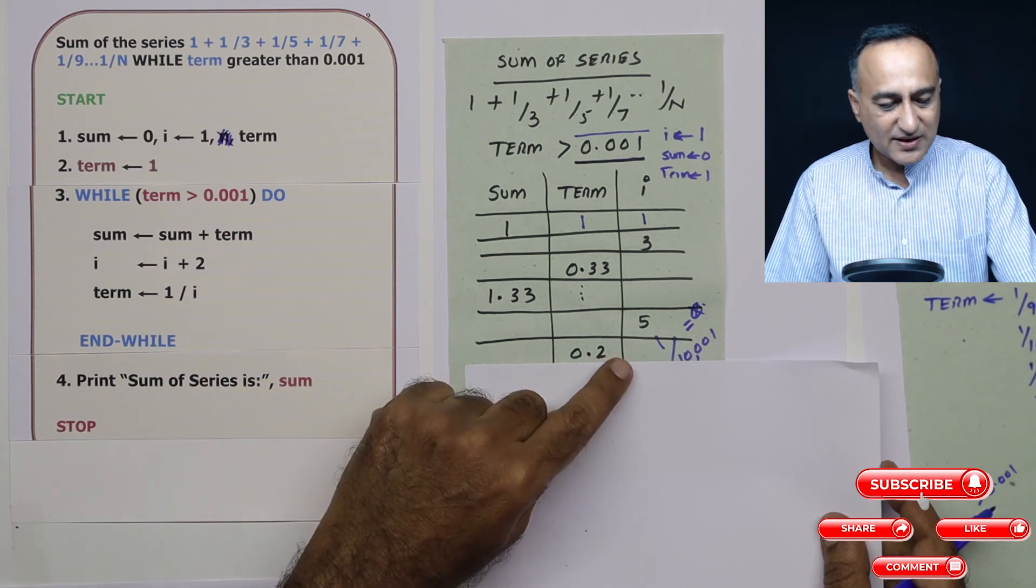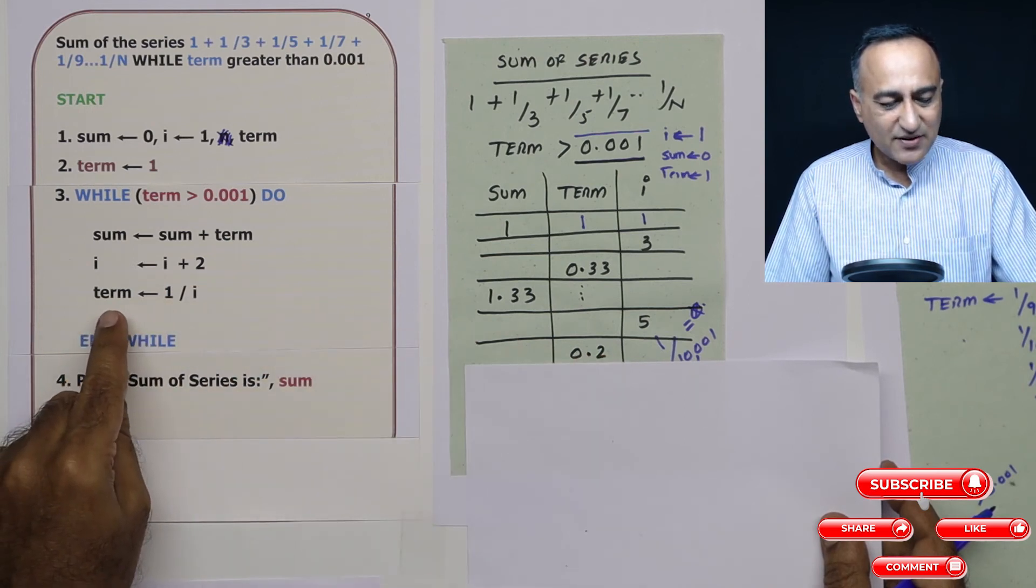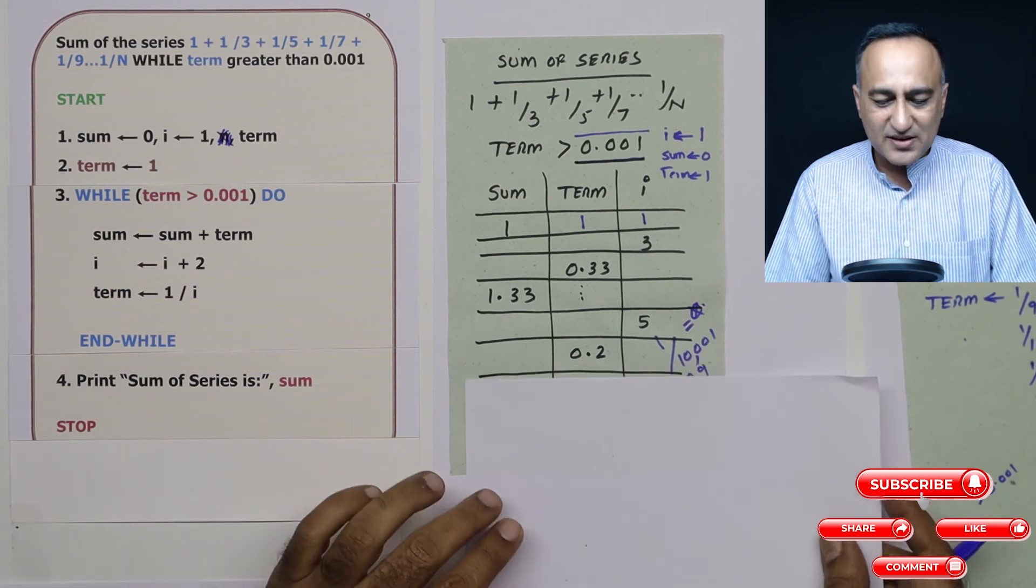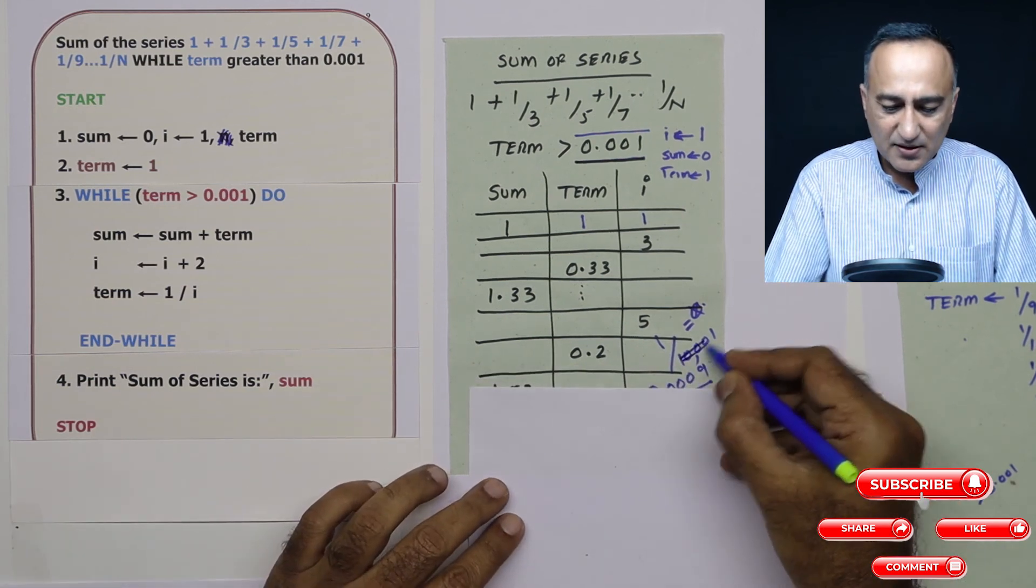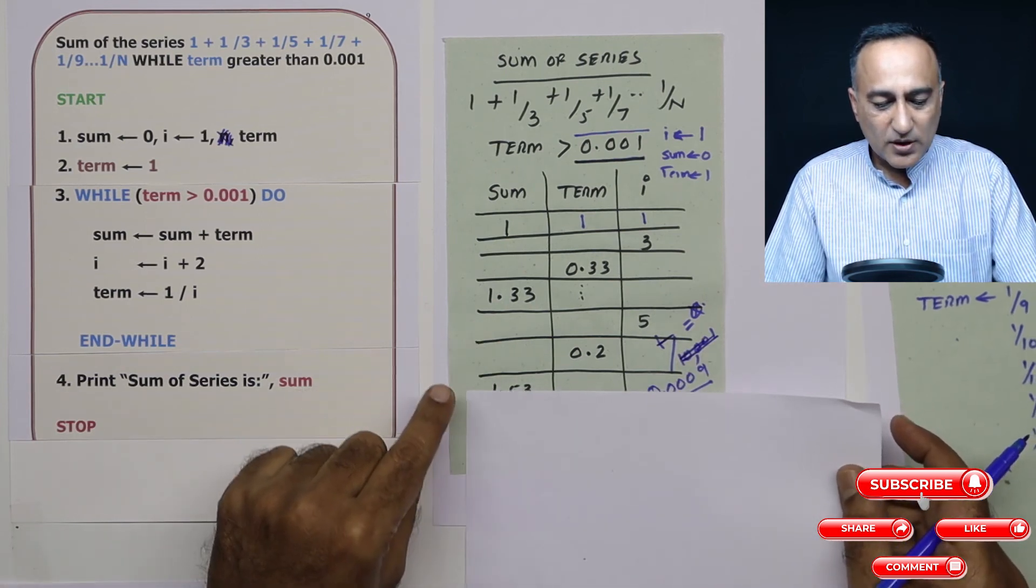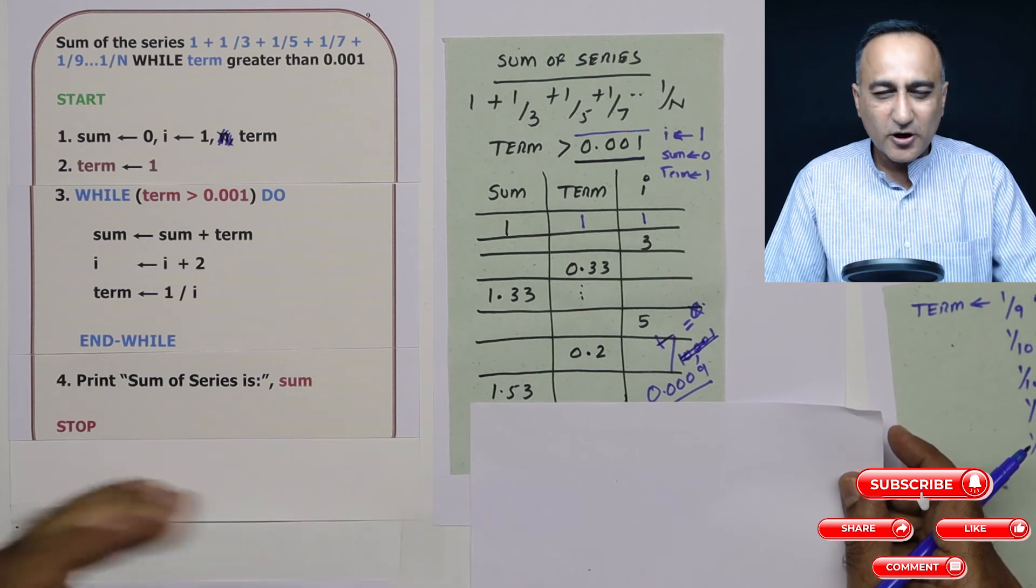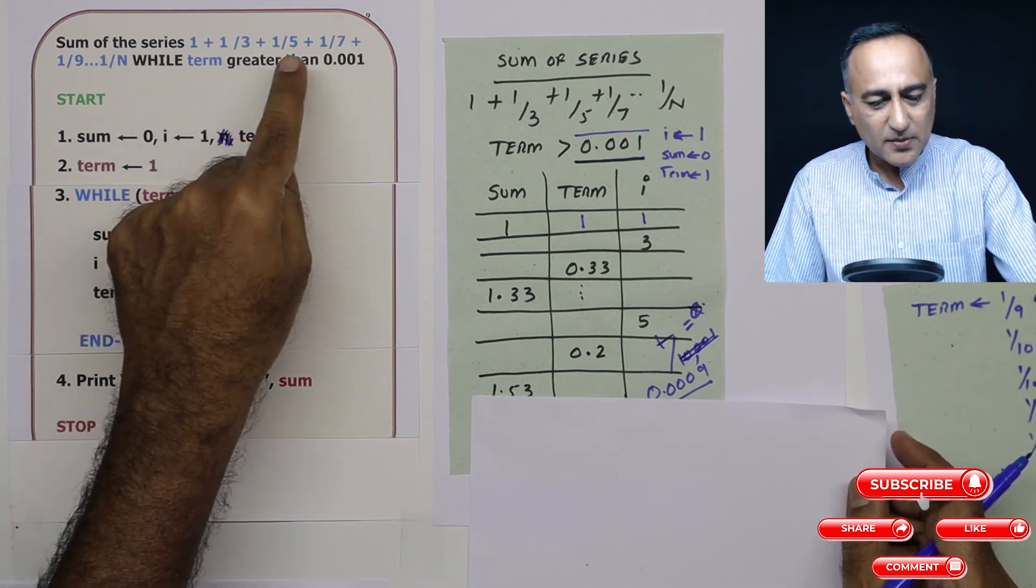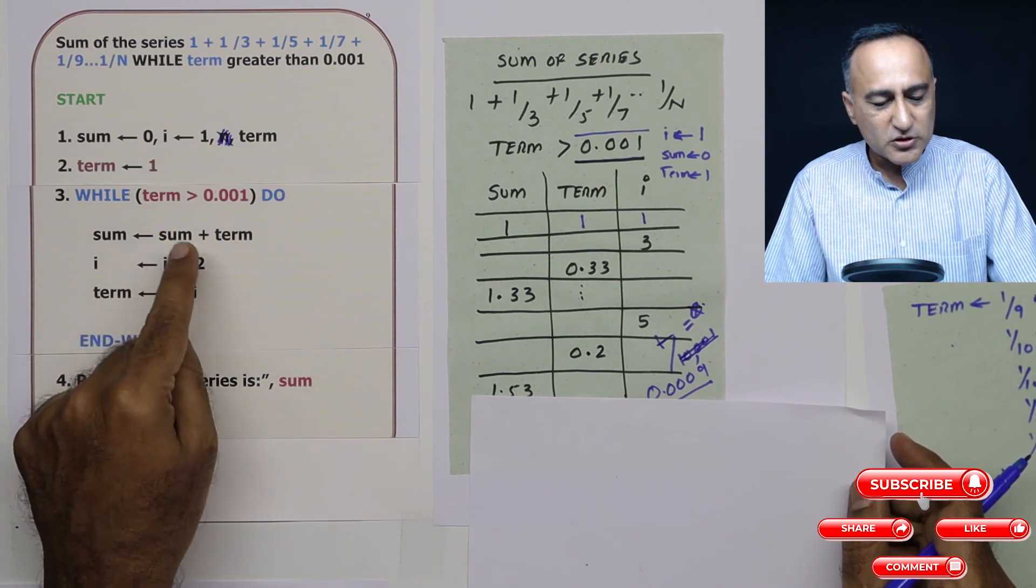i is now 7. Once i is 7, term is 1 upon 7 is 0.167 something like that. So what happens now is 0.167 plus 1.53, so it will be something like 1.70 something. So this particular process of adding the term to sum will continue.